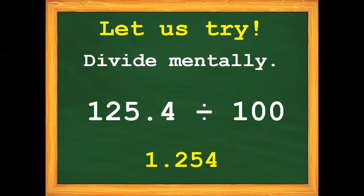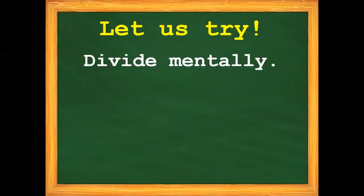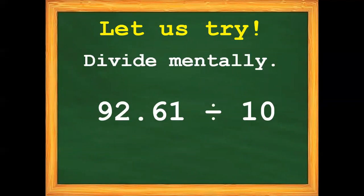Let us now proceed with number 4. Divide mentally. We have 92 and 61 hundredths divided by 10. The correct answer is 9 and 261 thousandths. Are you correct? Very good!